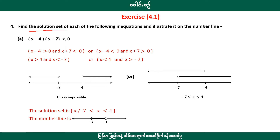We will find the solution set. The solution set is the number line. The number line is to rank the number line that we created. This will change the number line. We can perform the number line on our plot. If you look at the number line, it's not clear. Now we have to put this on top. X is greater than 4, x is less than minus 7. X is less than 4, x is greater than minus 7.